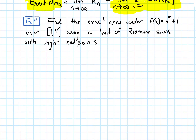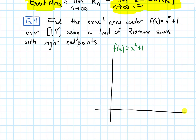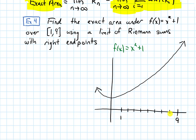We've looked in a previous video at the function f of x equals x squared plus 1 over the interval from 1 to 9, and estimated that area using left endpoints, right endpoints, and midpoints. Now let's find the exact area using this limit of Riemann sums with right endpoints. I'll draw my function — it's a parabola on the interval from 1 to 9. I'm splitting this into n rectangles, labeling the left endpoint x naught at 1, then x₁, x₂, and so on, with 9 representing x sub n.